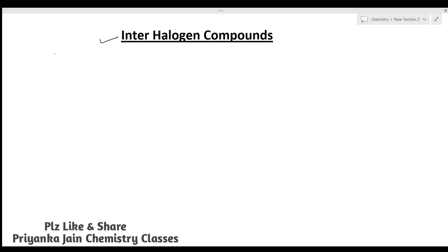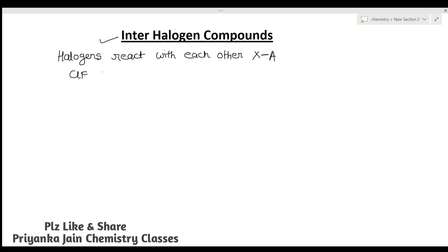What are interhalogen compounds? Halogens have a tendency to react with each other. Suppose we have halogen X and another halogen XA — they can react to form compounds like ClF and BrF. Such compounds are known as interhalogen compounds; that is, compounds formed between two halogens.